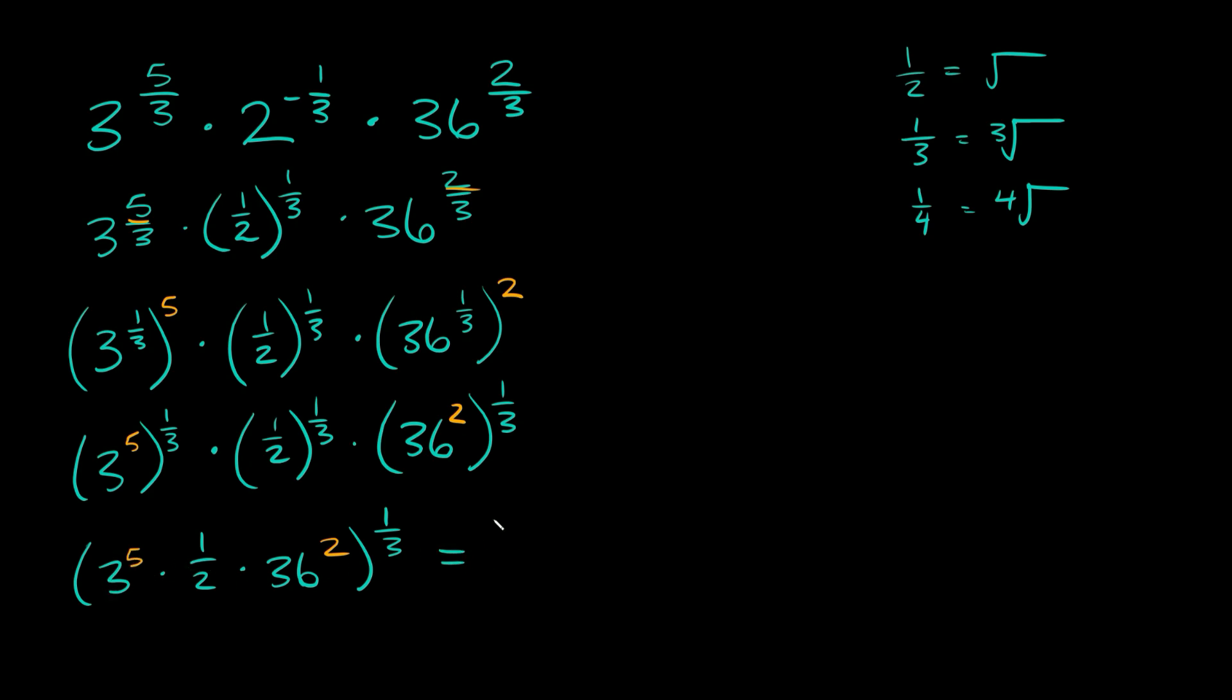So then this is going to be equal to, let's see, 3 to the 5th, that's equal to 243 times 1 half times 36 squared, which is 1,296. And again, that's raised to the 1 third power.